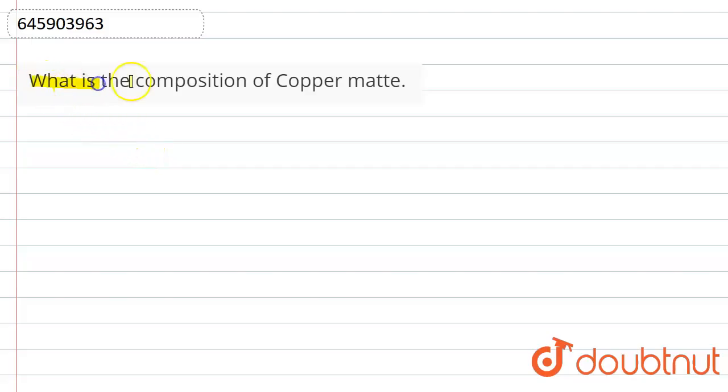So basically, composition means which elements are present in the copper matte that we have to discuss. Copper matte is a mixture of copper sulfide and iron sulfide.